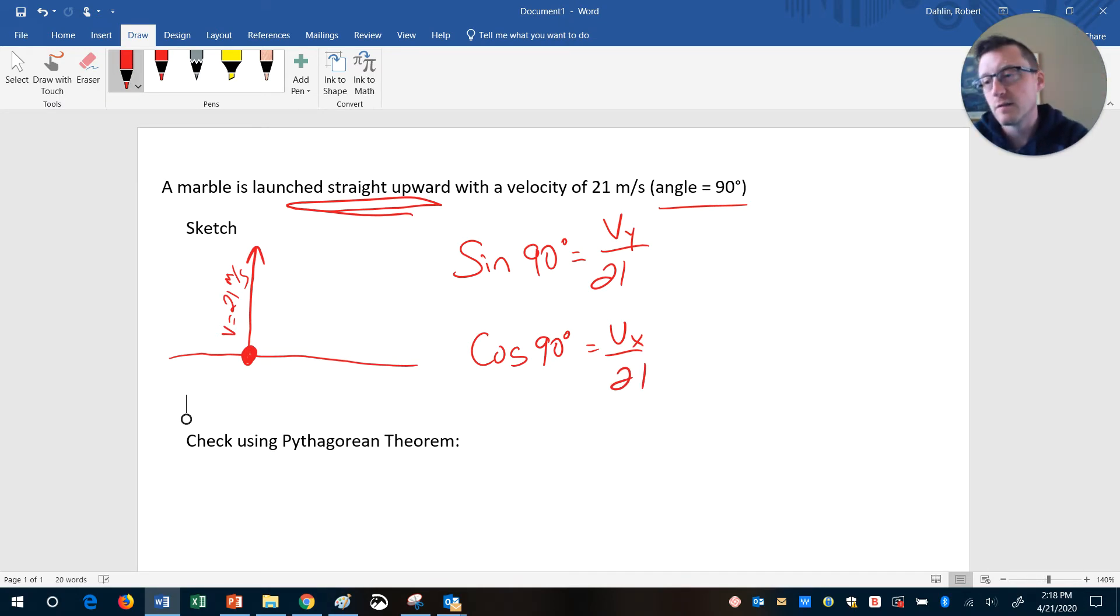So sine, take 21, sine of 90 degrees actually gives you the number one. So if you take 21 times one, we have sine of 90 degrees equals one, so we have one equals Vy over 21, and then multiply both sides by 21, and then that tells me the Vy is 21.